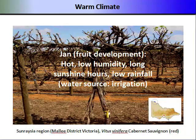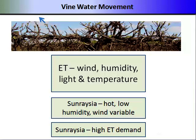Fruit development — typically veraison — occurs in January in this region. During this important developmental time, the vines are subjected to hot, low-humidity conditions, long sunshine hours, and low rainfall, where the only water source is typically irrigation. Evaporative transpiration, or ET, is driven by climate inputs including wind, humidity, radiation, and temperature. In warm climates, the ET demand tends to be high.